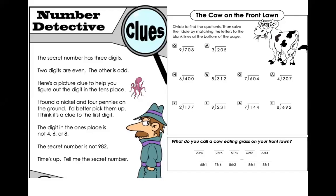Remember, all secret numbers and riddles must be turned in by Wednesday at five o'clock. All right ladies and gentlemen, the number detective for today. The secret number has three digits. Two digits are even, the other is odd, and make sure you use that picture clue to help you figure out the digit in the tens place.